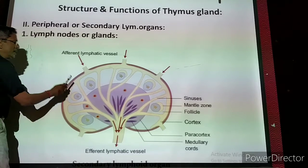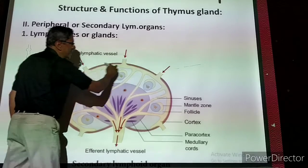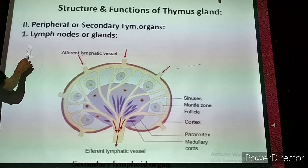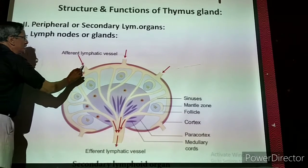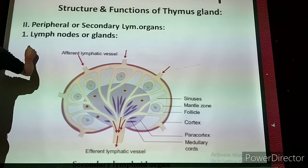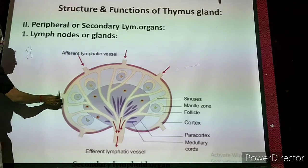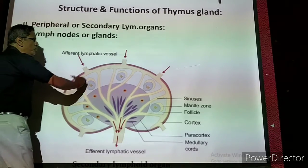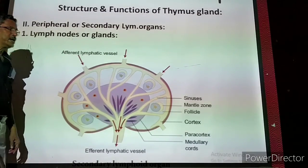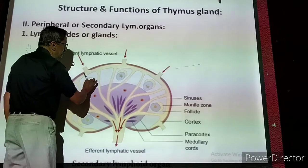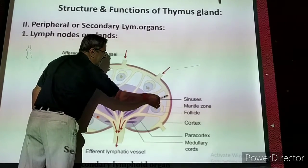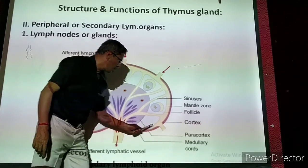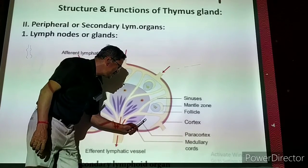Taking one lymph node and enlarging the section: there is one vessel going down, and small lymph vessels are joining to it from different sides. Internally the lymph gland is divided into three regions. The outermost light-colored region is called the cortex.